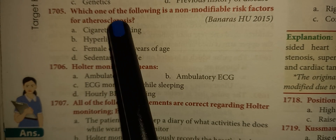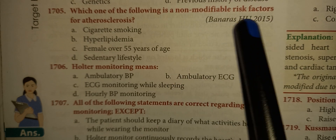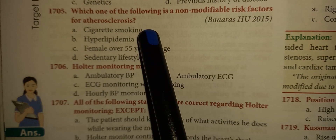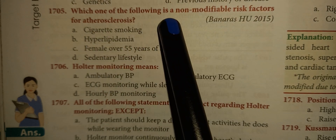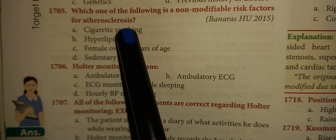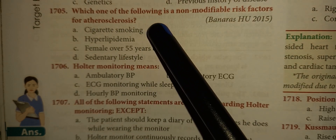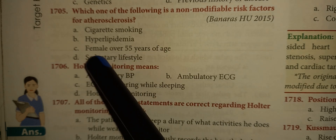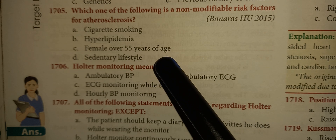Which one of the following is a non-modifiable risk factor for atherosclerosis? Answer: C. Female over 55 years of age.